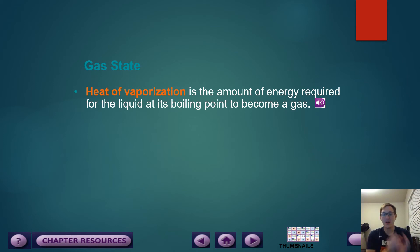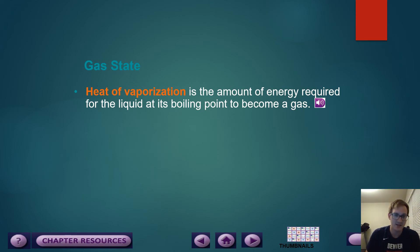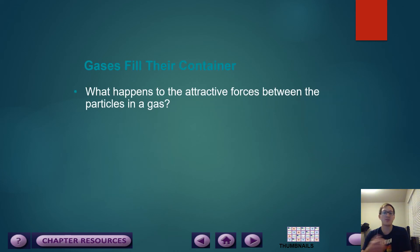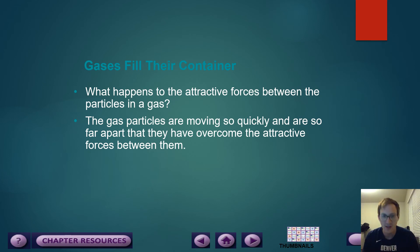Just like melting point and boiling point are temperatures, heat of fusion and heat of vaporization are energies. Heat of vaporization is the amount of energy required for a liquid at its boiling point to become a gas. We have to give enough energy to this liquid to break the bonds it has as a liquid and make these molecules bounce so freely that they become a gas. The gas particles are moving so quickly and are so far apart that they overcome the attractive forces between them, essentially having no attractive forces, bouncing off the walls of their container so quickly.